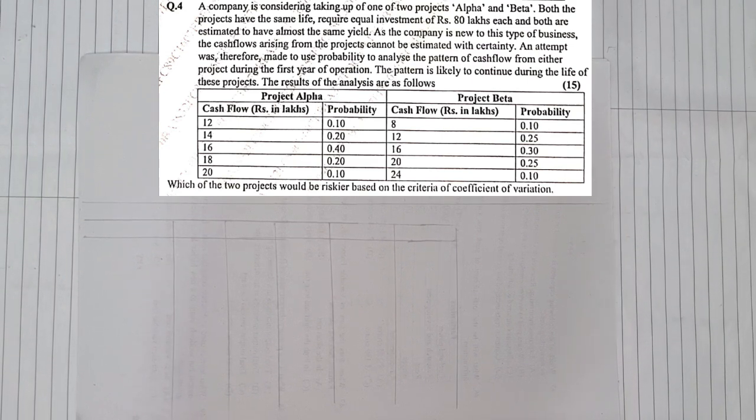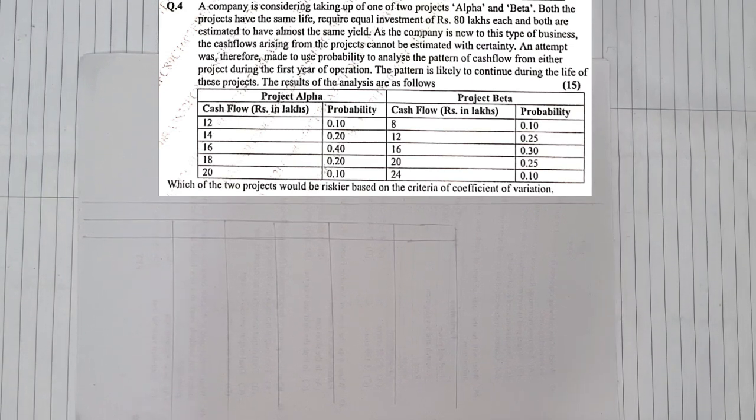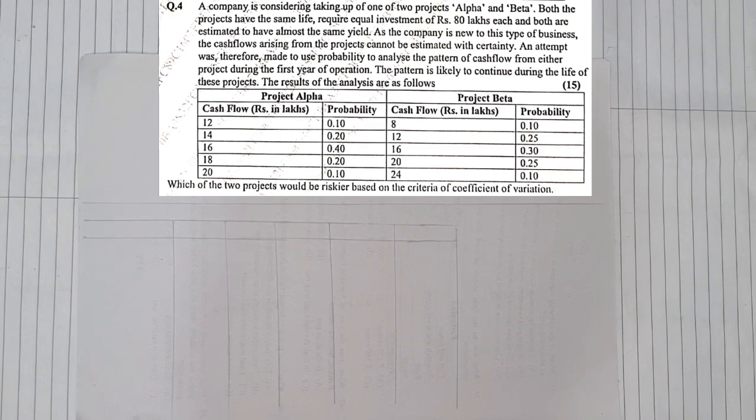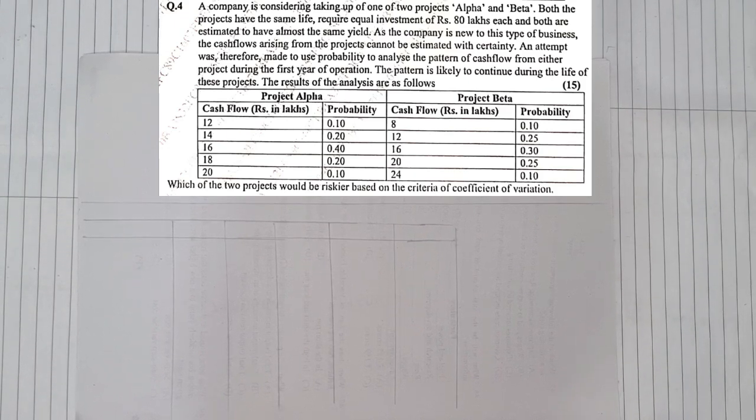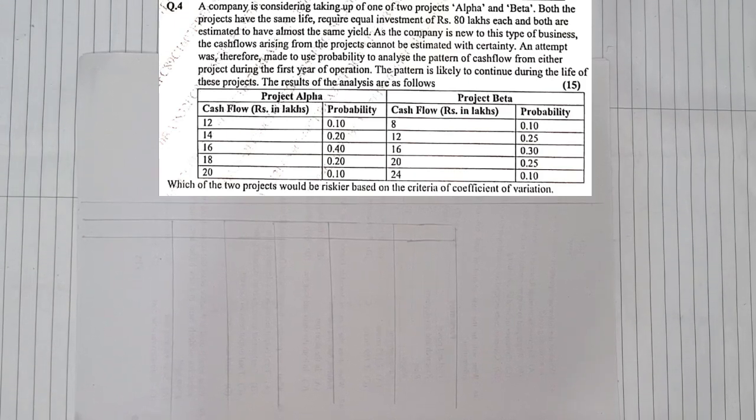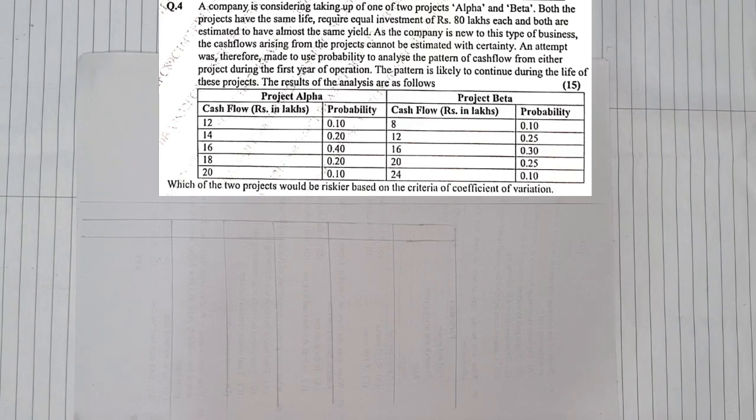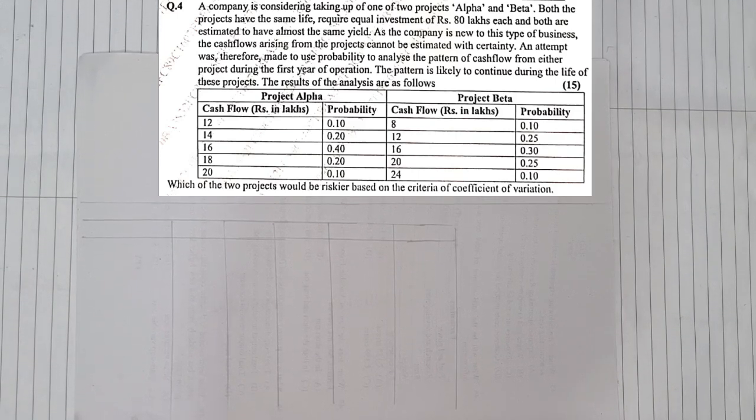Let us see the last question which was pending from this particular question paper. That was question number 4, 15 marks. A company is considering taking up one or two projects Alpha and Beta. Both the projects have the same life, require equal investment of rupees 80 lakhs each, and both are estimated to have almost the same yield. As the company is new in this type of business, the cash flow arising from the projects cannot be estimated with certainty.